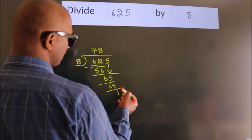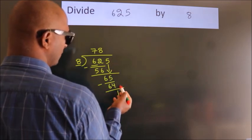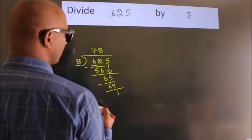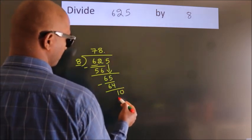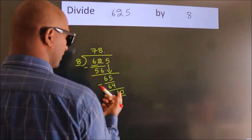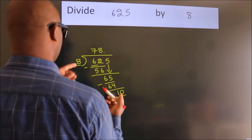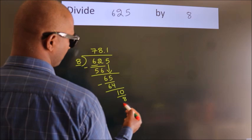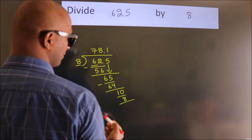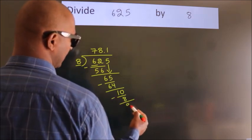After this, no more numbers to bring down. So, what we do is, we put dot take 0. So, 10. A number close to 10 in 8 table is 8 once 8. Now, we subtract. We get 2.